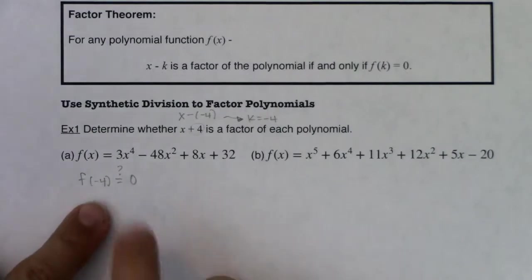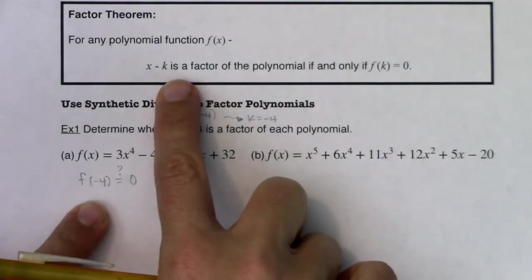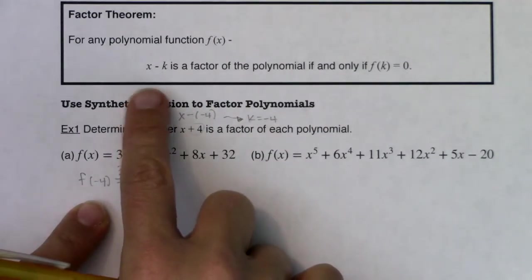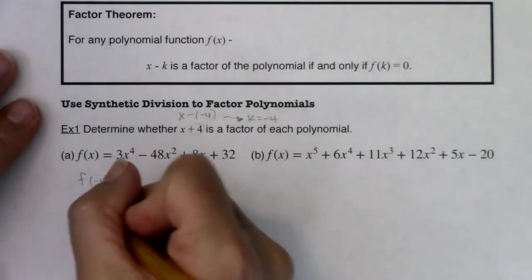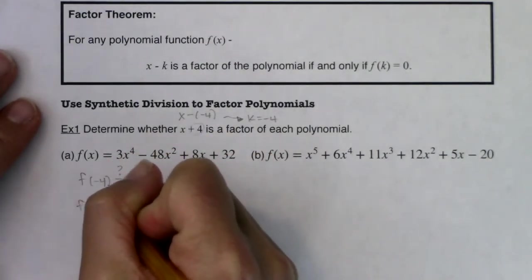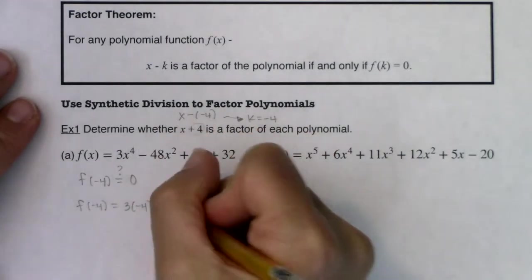If it is, if this is true, if f of k equals zero, then x minus k is a factor. That's what the factor theorem says. So let's find out if f of negative 4 is a factor. Now, if I wanted to figure this out, I've got to plug negative 4 in. And you can start to see it's going to be a little bit cumbersome.